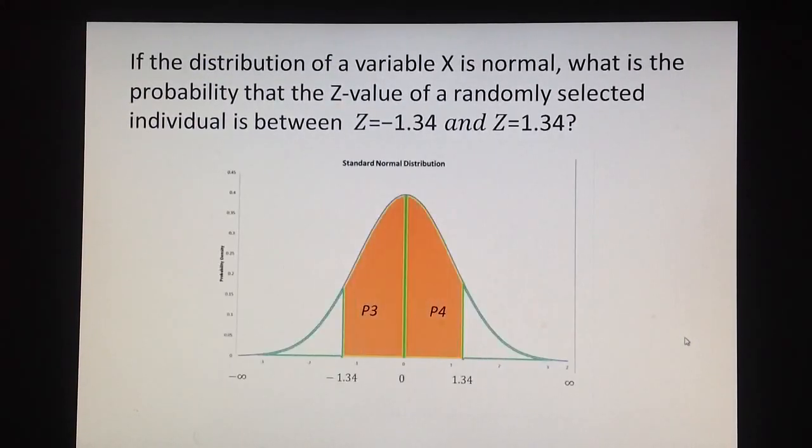We will calculate today the area between 0 and my score of negative 1.34, which is the area P3, and the probability from 0 to 1.34, that a randomly selected individual will have z-score between 0 and 1.34, which is P2. As you can see, these two probabilities measured with the areas P3 and P2 are equal.